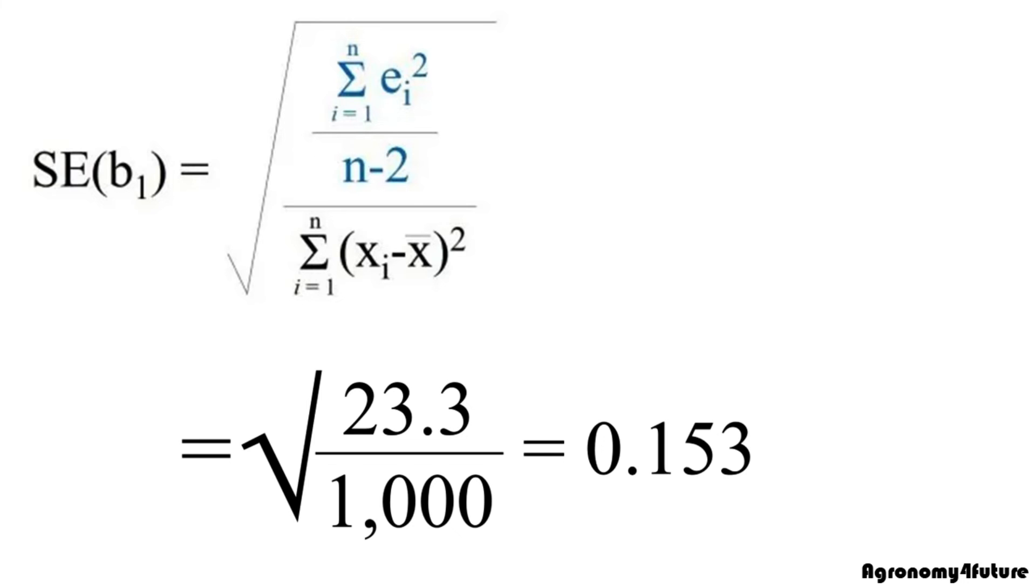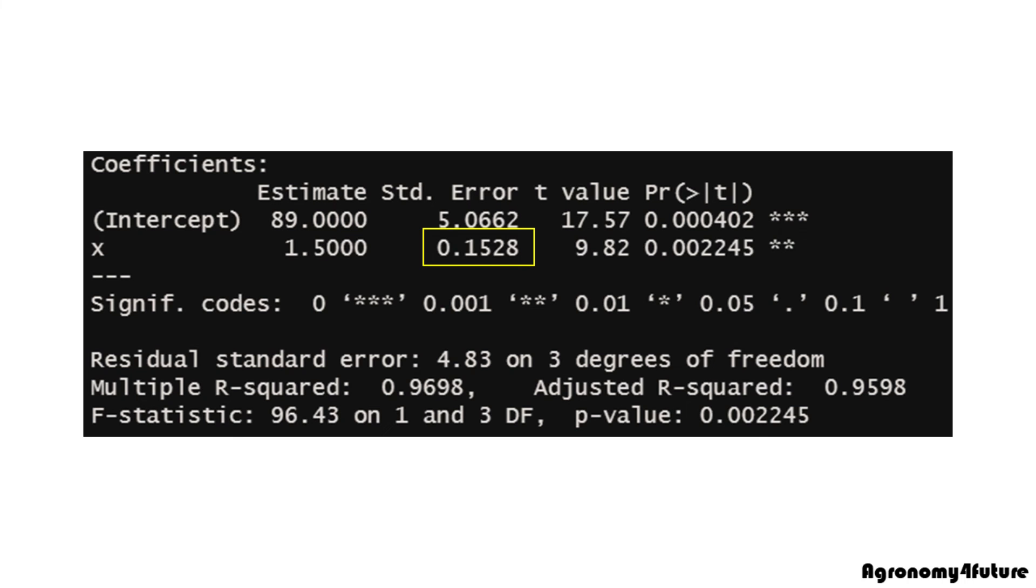Therefore, the standard error of slope will be 0.153. Let's check this value is correct. If you see the standard error of slope which the statistical program provided, you can find it's the same value.